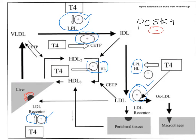So T3 and T4 decrease the expression of PCSK9 while simultaneously increasing the expression of LDL receptors, thereby facilitating uptake of LDL from the circulation. T3 and T4 also increase bile acid synthesis — that is, bile acid formation from cholesterol — especially in the liver.